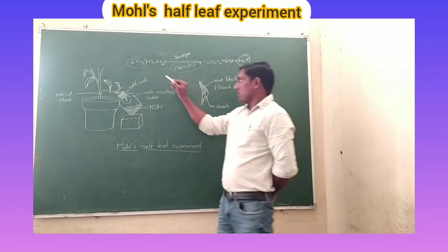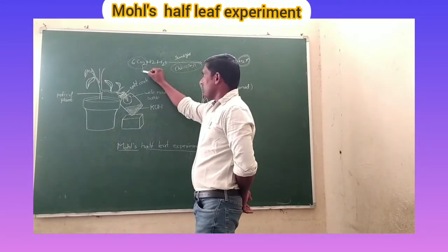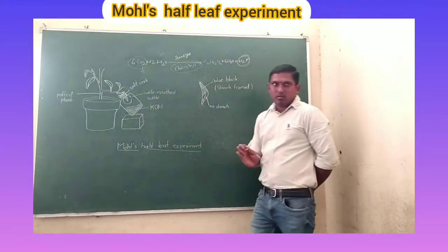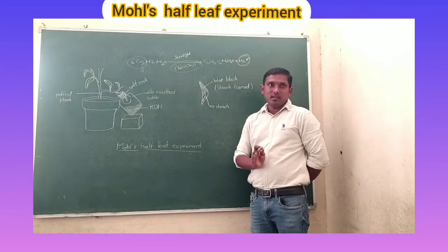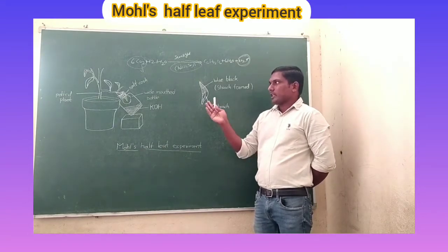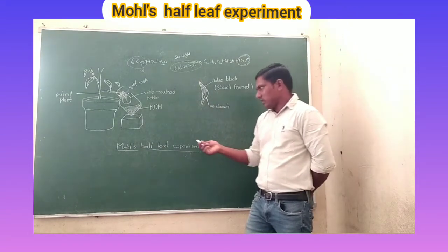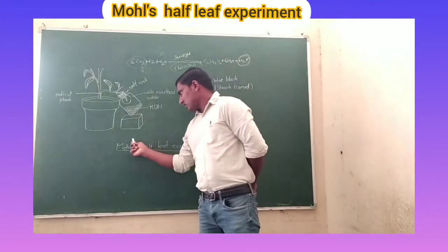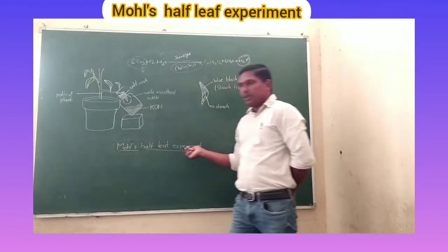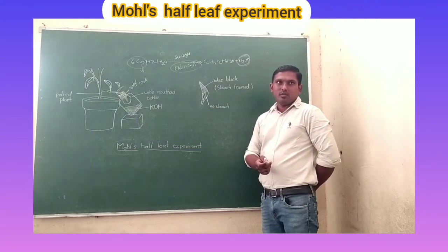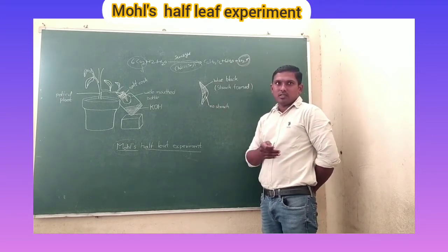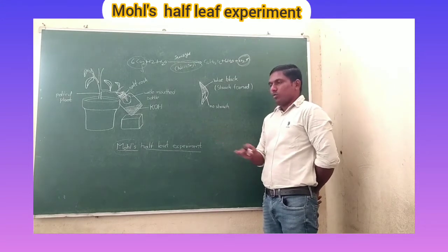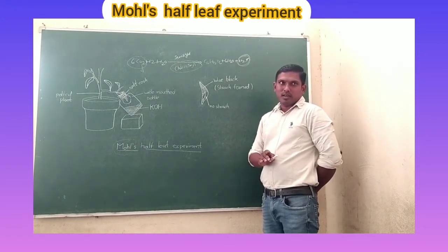Let us discuss about carbon dioxide being necessary for photosynthesis. Without carbon dioxide, plants cannot carry out the photosynthesis process. So, the first step to demonstrate this experiment involves what scientists call the moles of leaf experiment. This is a very important foremost question — carbon dioxide is necessary for photosynthesis.